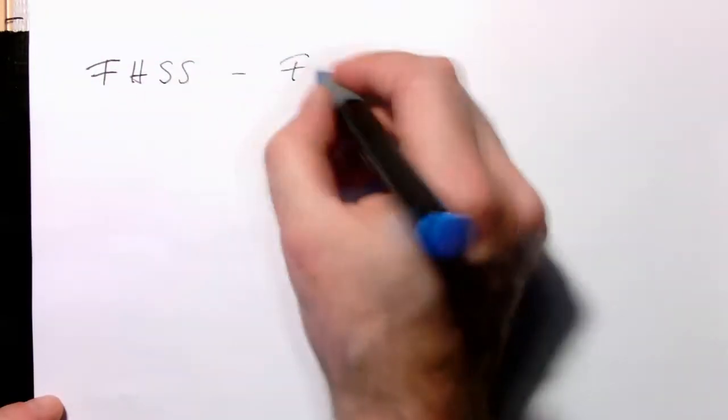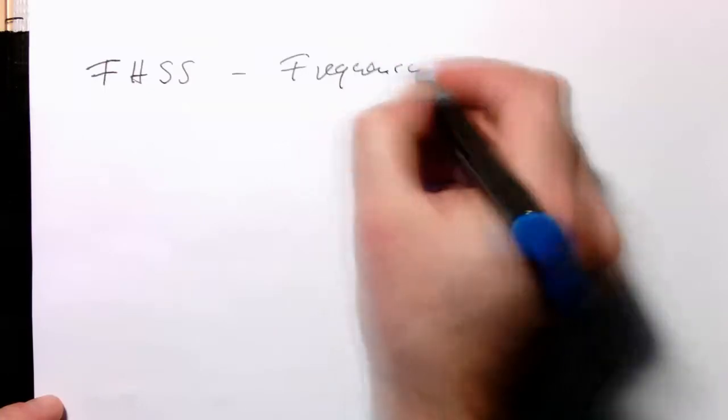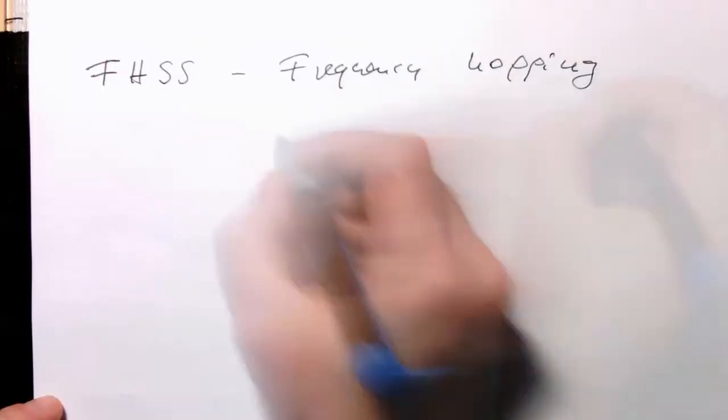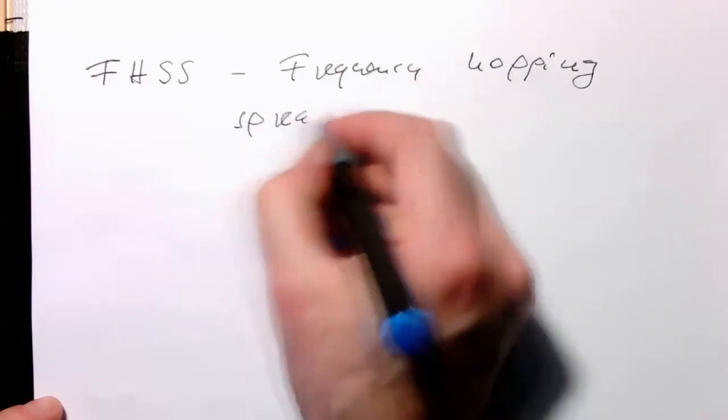A bit more advanced version of the frequency-division-multiplexing is the frequency-hopping-spread spectrum. So FHSS, frequency-hopping-spread spectrum.